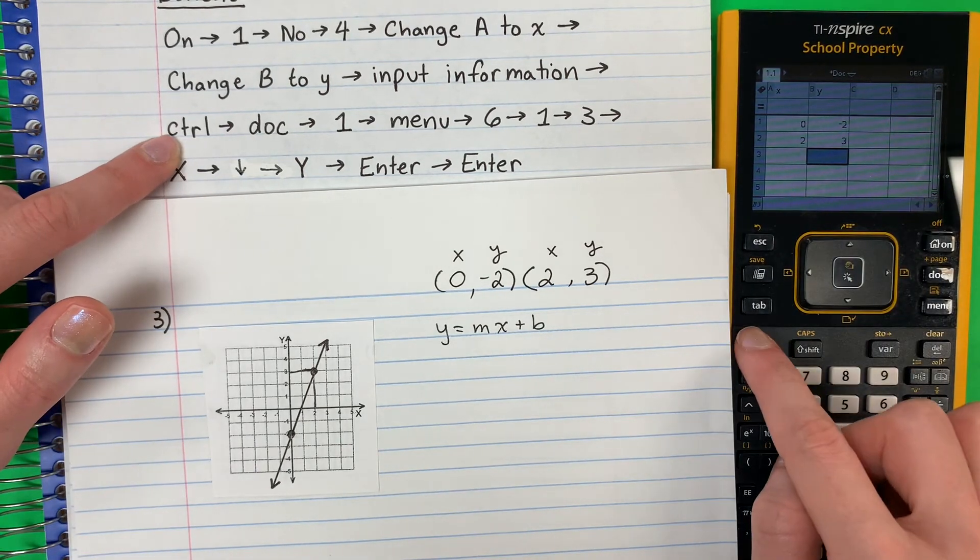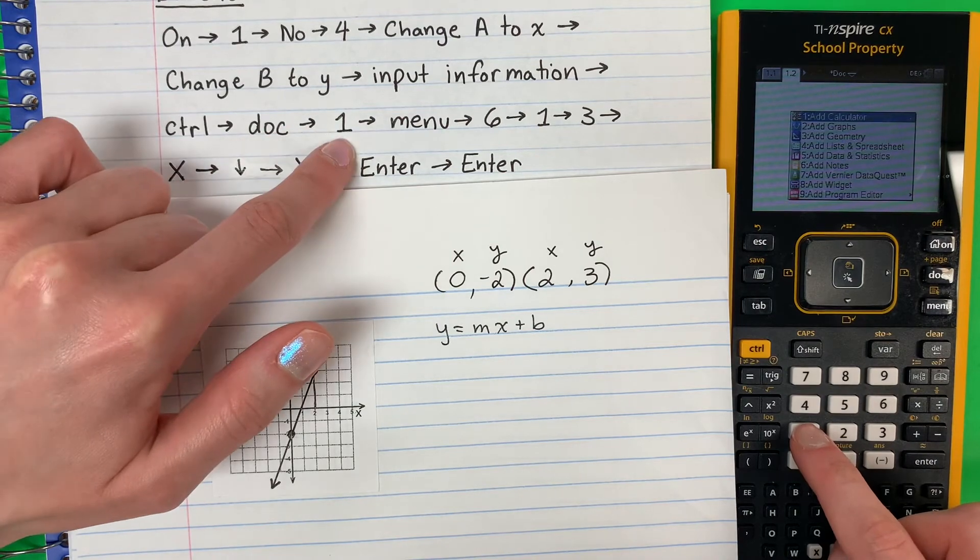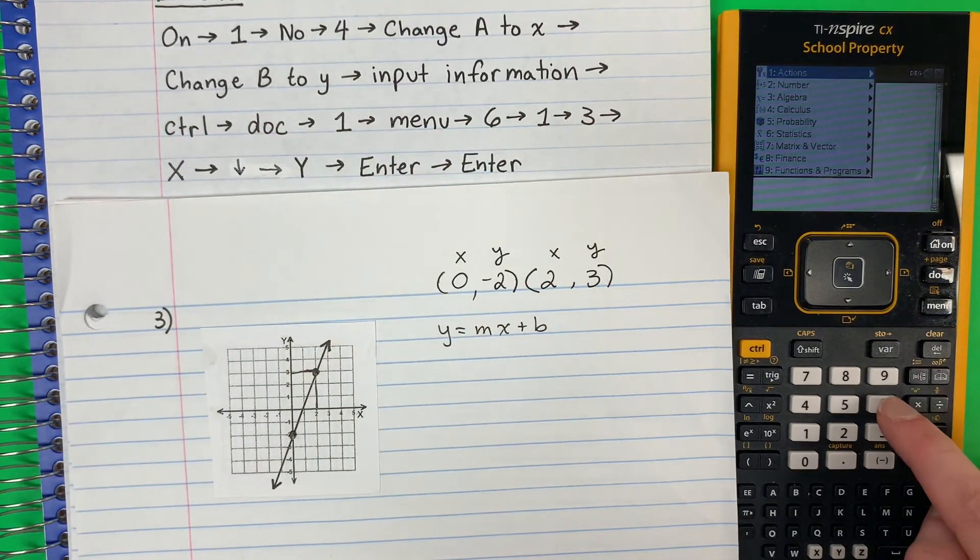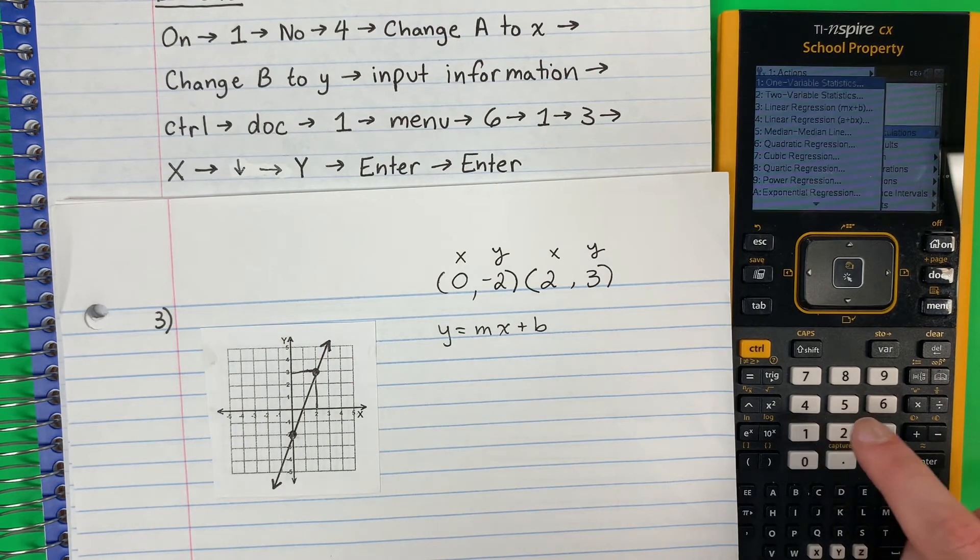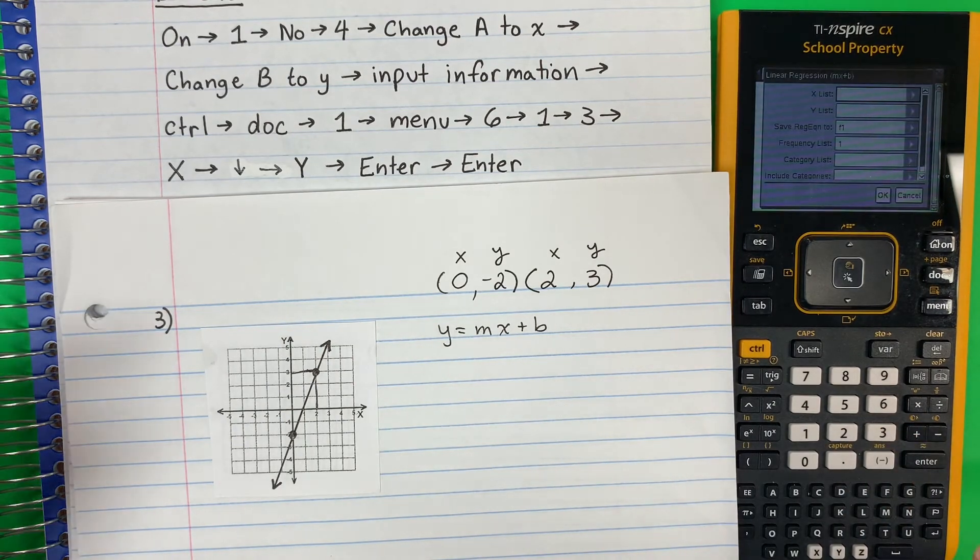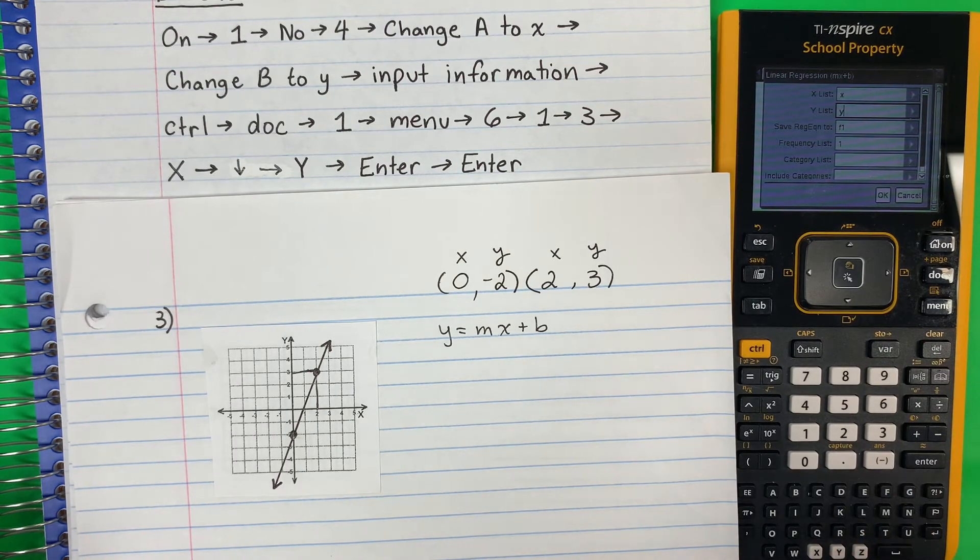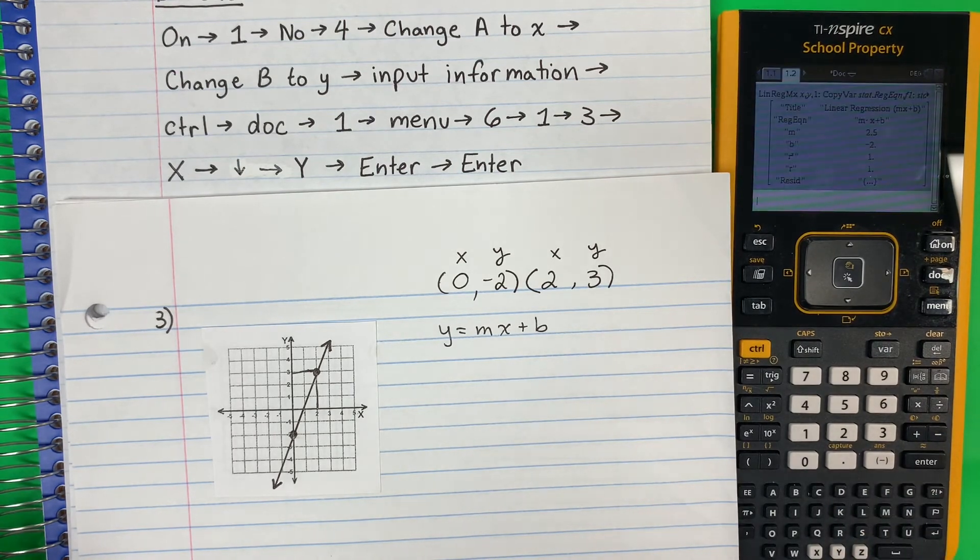Now, control, dock, 1. Menu, 6, 1, 3. 6, 1, 3. Here you put X. Down. Y. Enter. Here we go.